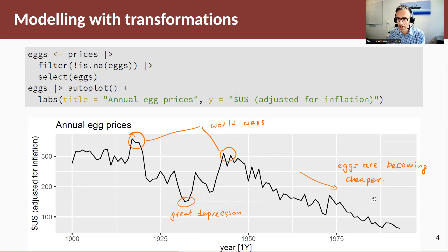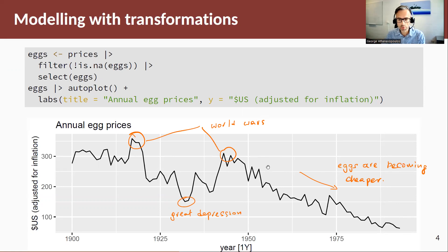Now, if we're to forecast that and project downwards — say with a linear trend — at some point we're going to cut the zero axis, and we don't want that. We want this to plateau out. Hence, we want to take a log transformation.